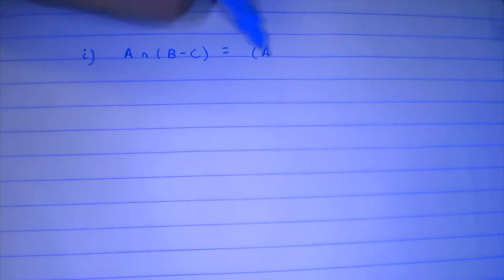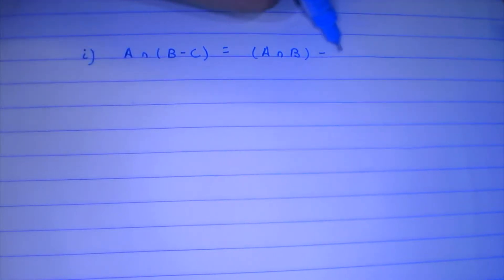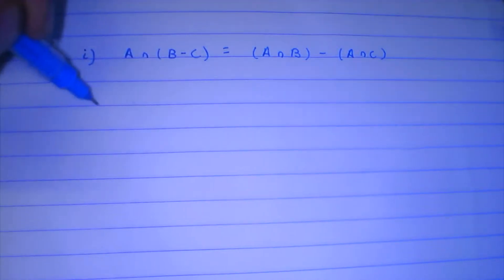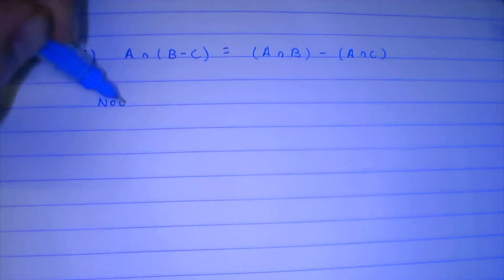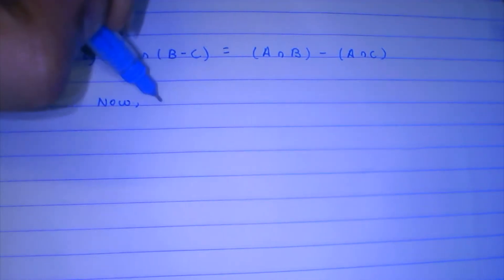Welcome again. In this video we are going to prove 5 new equalities, so let's get straight started. First we have: A intersection (B minus C) is equal to A intersection B minus A intersection C.